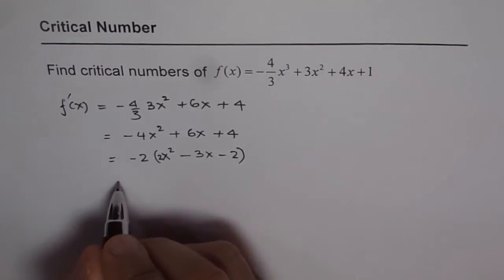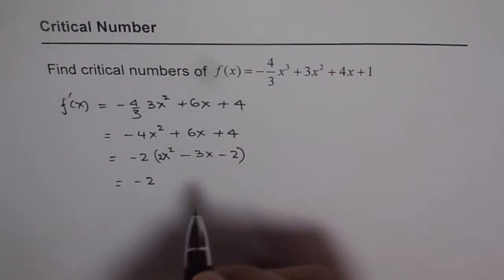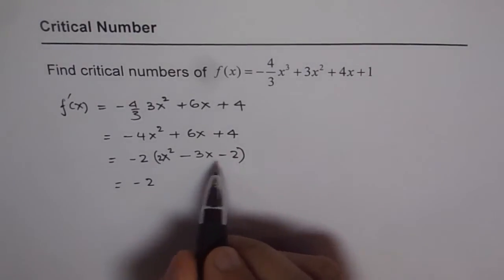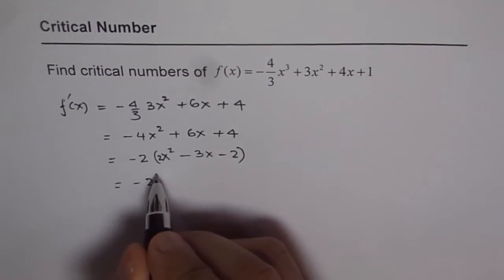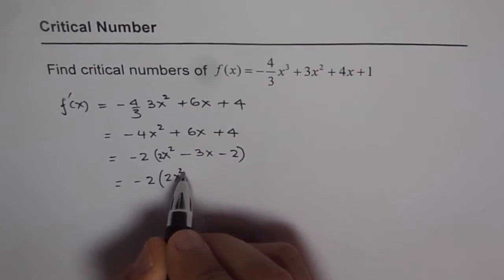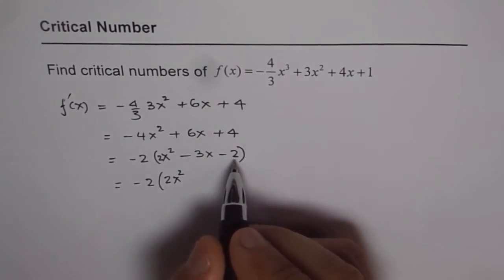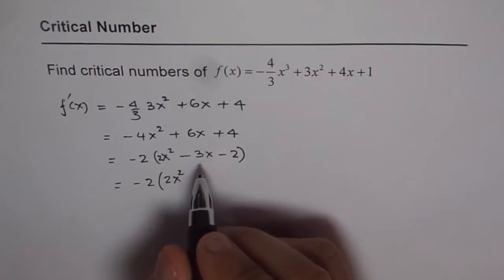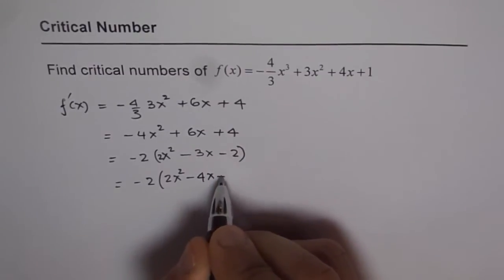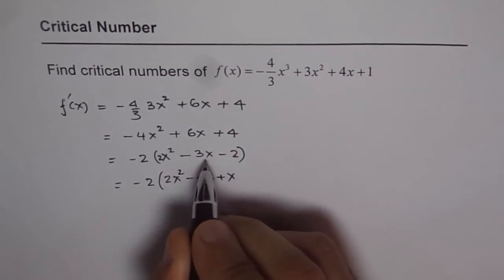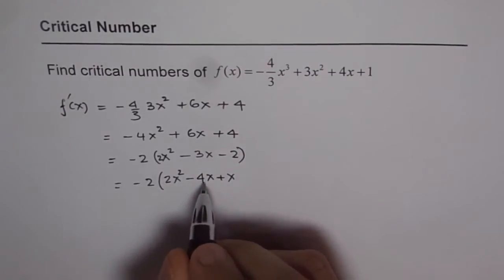This can be factored. You need a product of -4 and sum of -3. Product of -4 and sum of -3 means -4 plus 1. So we can write this as 2x² - 4x + x - 2. That means we split -3x as -4x + x.